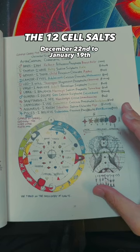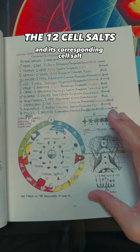December 22nd to January 19th belongs to Capricorn, which is the kneecaps and represents experience and its corresponding cell salt is calcium phosphate, and this mineral can be found in dandelions.